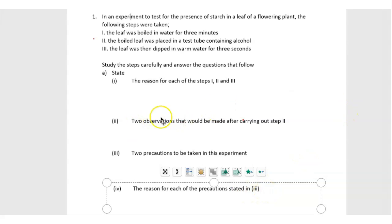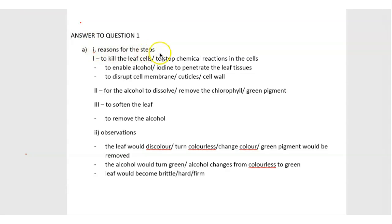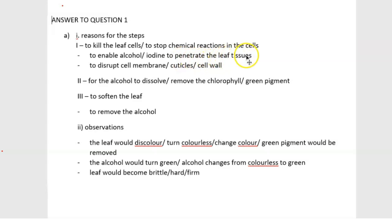So let's look at the expected answers. For step 1, it was carried out to kill the leaf cells or to stop chemical reactions taking place in the cells. Or you can say that it is to enable alcohol or iodine to penetrate the leaf tissues. Better still, you can say that the heating was done to disrupt cell membrane, cuticles, or cell wall so that the chemicals could penetrate into the tissue.